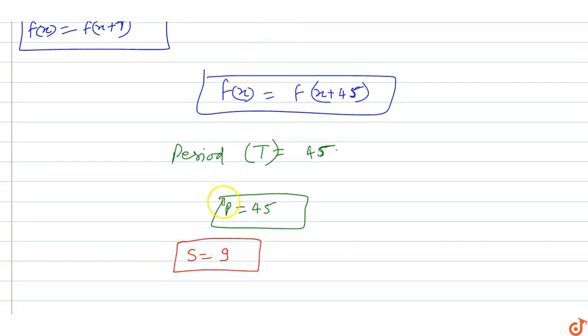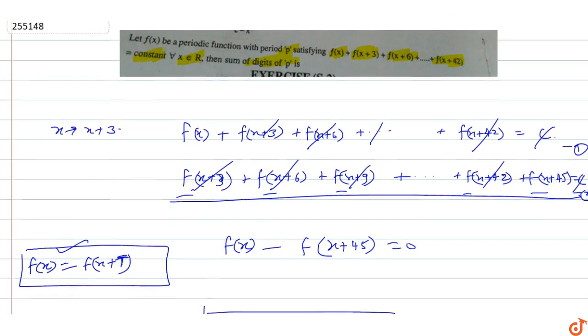4 plus 5 equals 9. So sum of digits of p equals 9. This is the answer for this question.